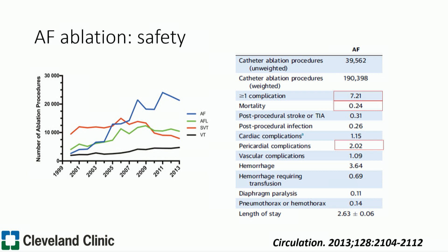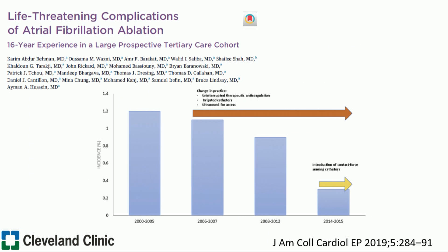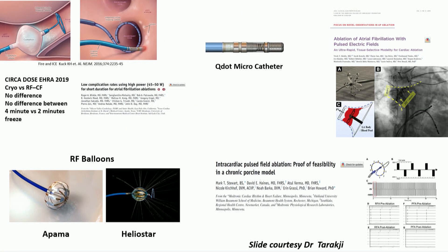The rates of complications from these procedures nationwide is still about 7%. This is a summary of our experience between 2000 and 2015, showing that at a large tertiary care center with a quality improvement initiative in place and adoption of new technology, we've seen a downtrend in complication rates. We also have new technology coming with the hope of improving safety and doing ablations more effectively. Most importantly, we need to understand AFib better and improve our ablation strategies in a more personalized approach.